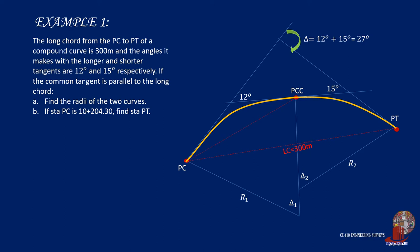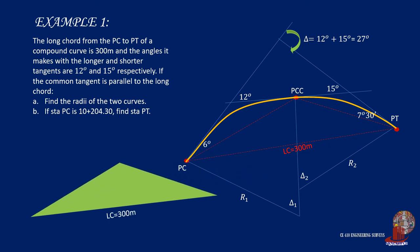If we connect PC and PCC, then PCC to PT, we can form a triangle. Recall that the line from PC to PCC is the long chord of the first curve, and same with PCC to PT as the long chord of the second curve. The angle created by tangent 1 and the long chord of the first curve is half its central angle, which is 6 degrees. It is similar with the second curve from PT, which is 7 degrees 30 minutes. Since the common tangent is parallel with the long chord, the remaining angles for the triangle are 6 degrees and 7 degrees 30 minutes. With 180 degrees less 6 degrees less 7 degrees 30 minutes, we have 166 degrees 30 minutes.